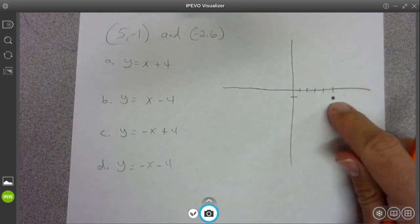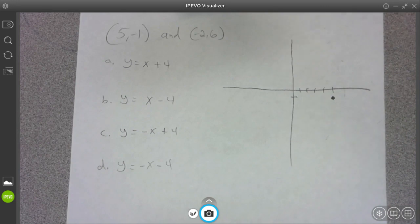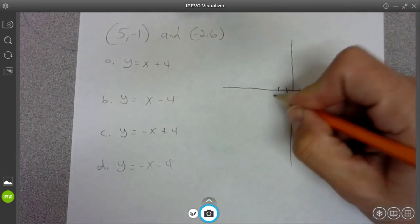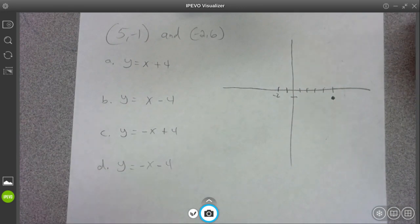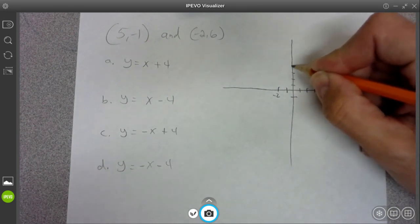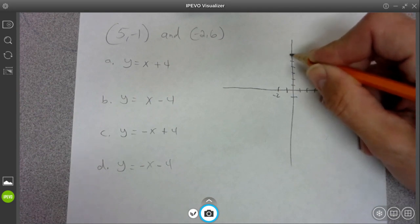Okay. That's my five, negative one. And then negative two, comma, six. One, two. That's my negative two. And then comma, six. One, two, three, four, five, six.